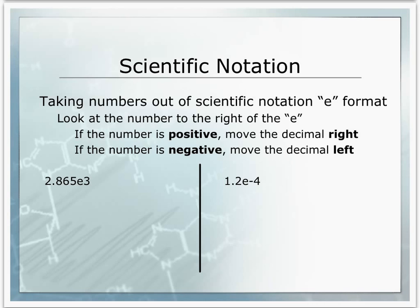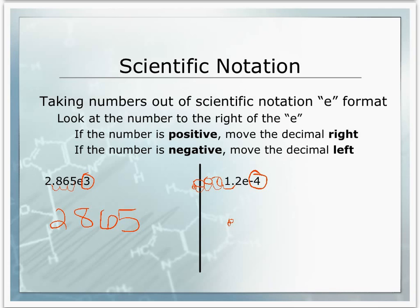When taking numbers out of scientific notation in the E format, you use the same idea. Look at the number to the right of the E. If it's positive, move the decimal to the right to make the number larger; if it's negative, move the decimal to the left to make it smaller. With a positive 3 next to the E, we move the decimal three times to the right, giving us 2,865 — a number greater than 10. For the negative exponent example, we move it 1, 2, 3, 4 places to the left, filling empty spaces with zeros, giving us 0.00012, which is smaller than 1.